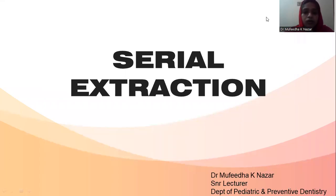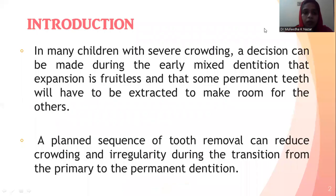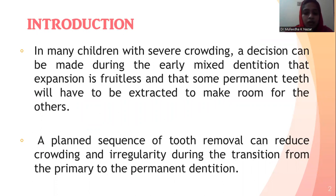Good morning all. Today we shall discuss about serial extraction. Many children present with severe crowding during their early mixed dentition period. In some cases, expansion is rootless and some teeth have to be extracted to make room for the others. This planned sequence of tooth removal can reduce crowding and irregularity during the transition from primary to permanent dentition. This is serial extraction.